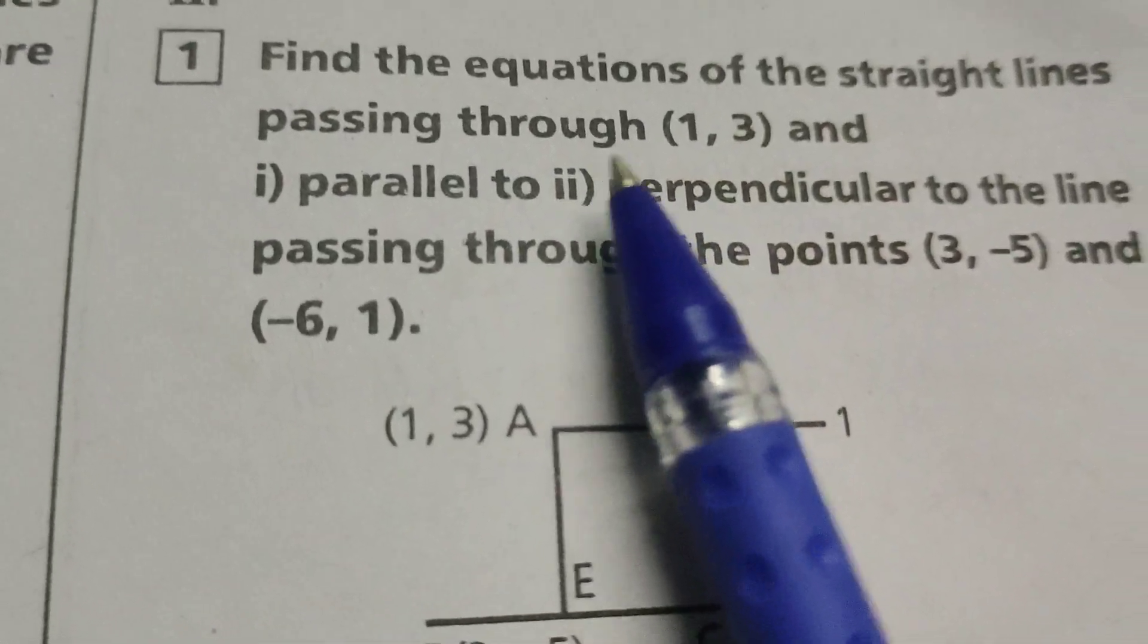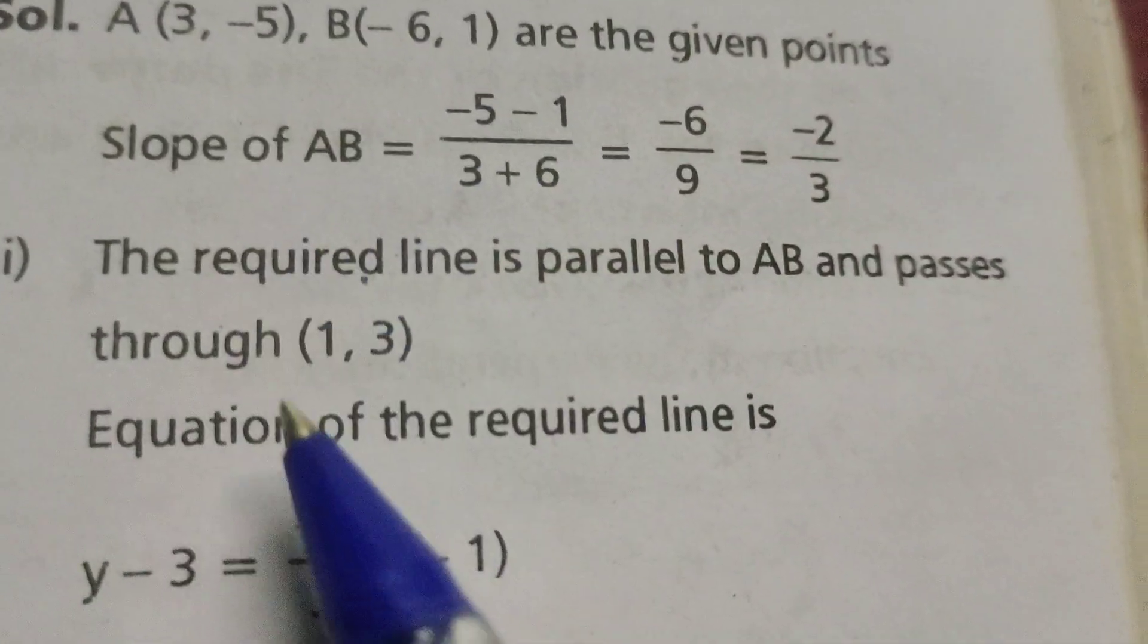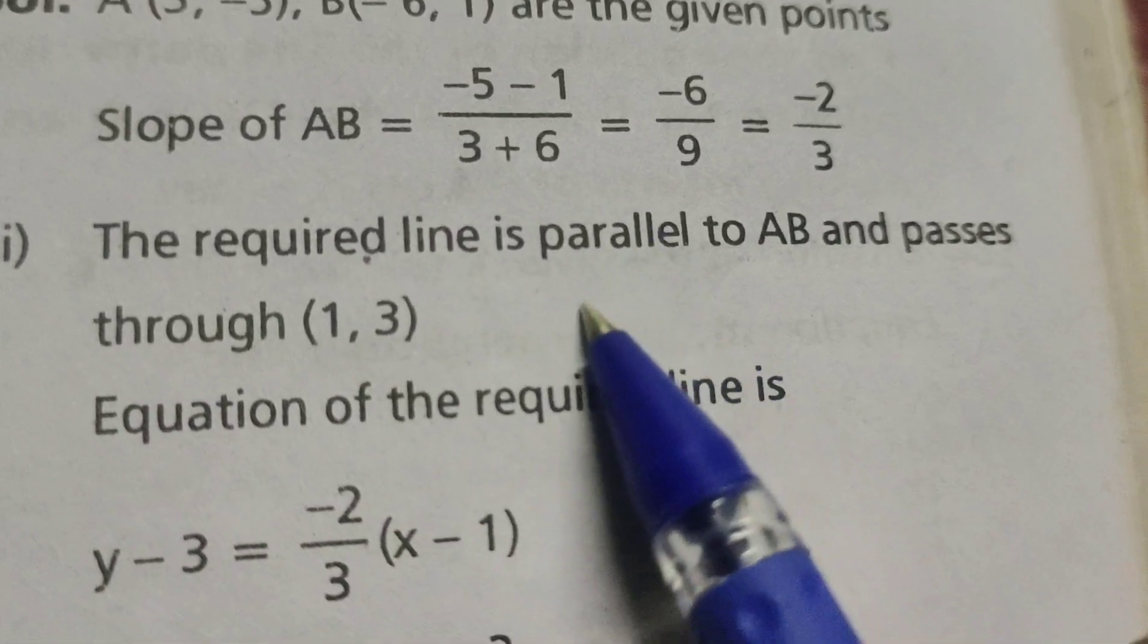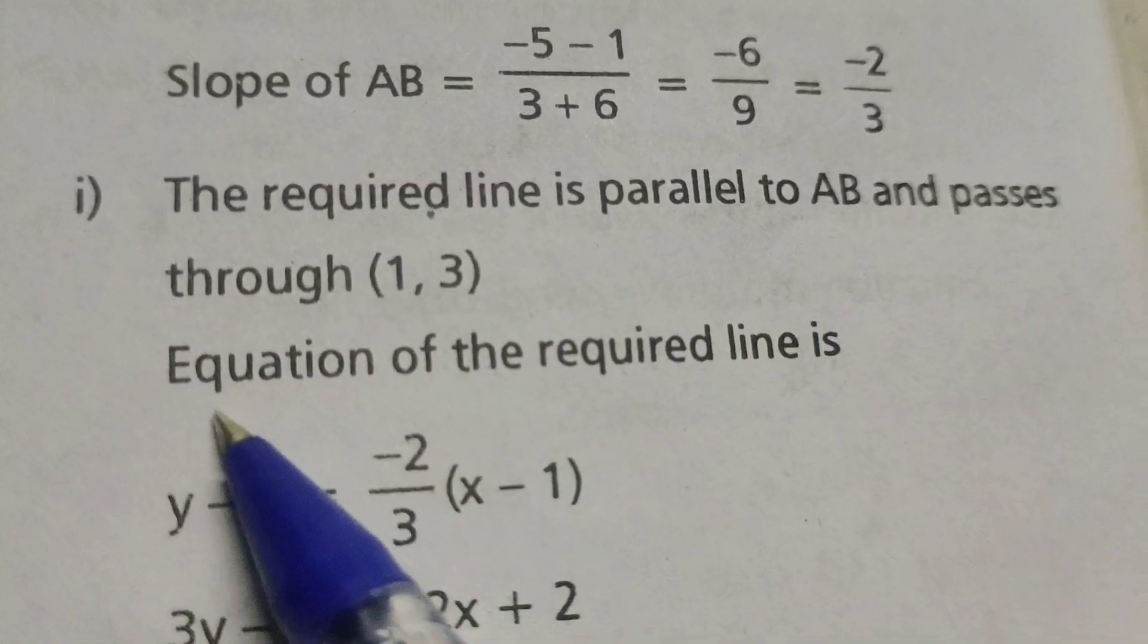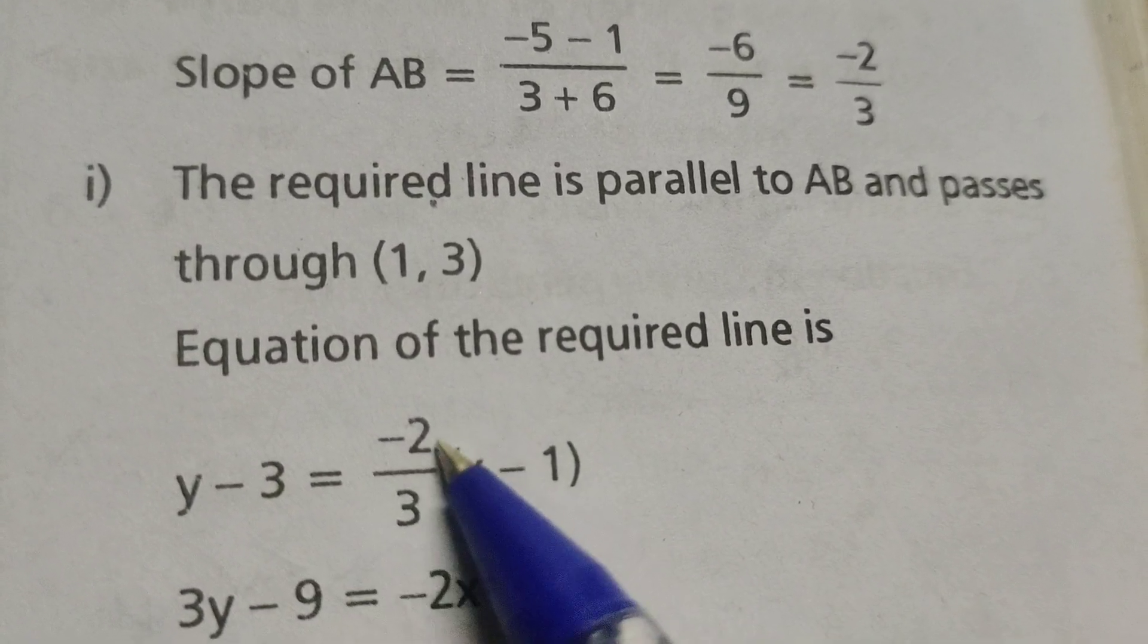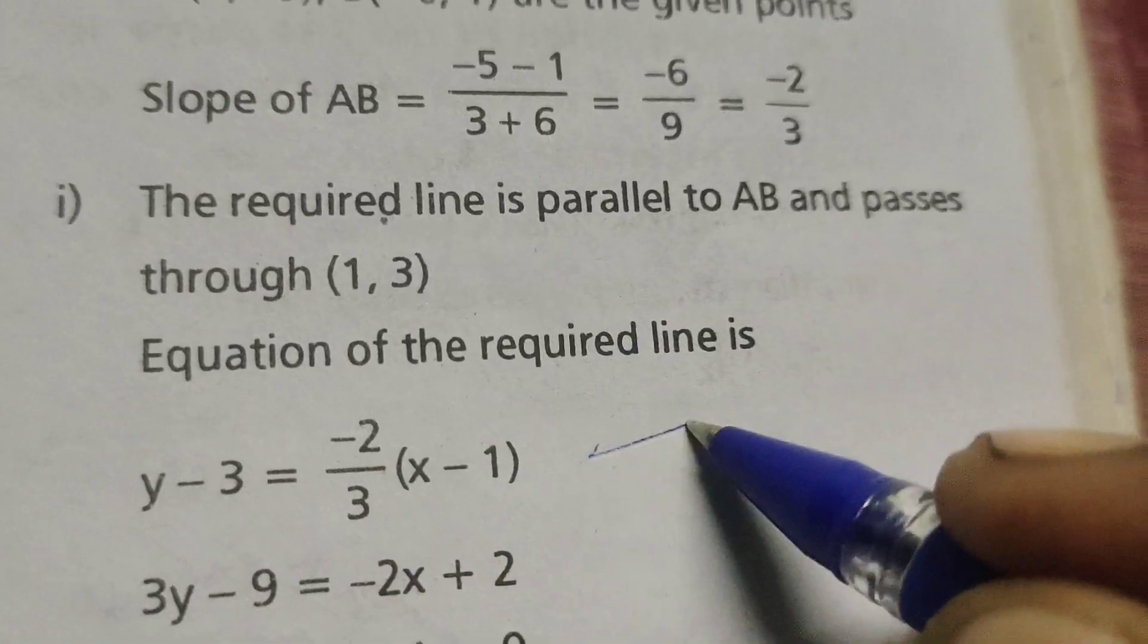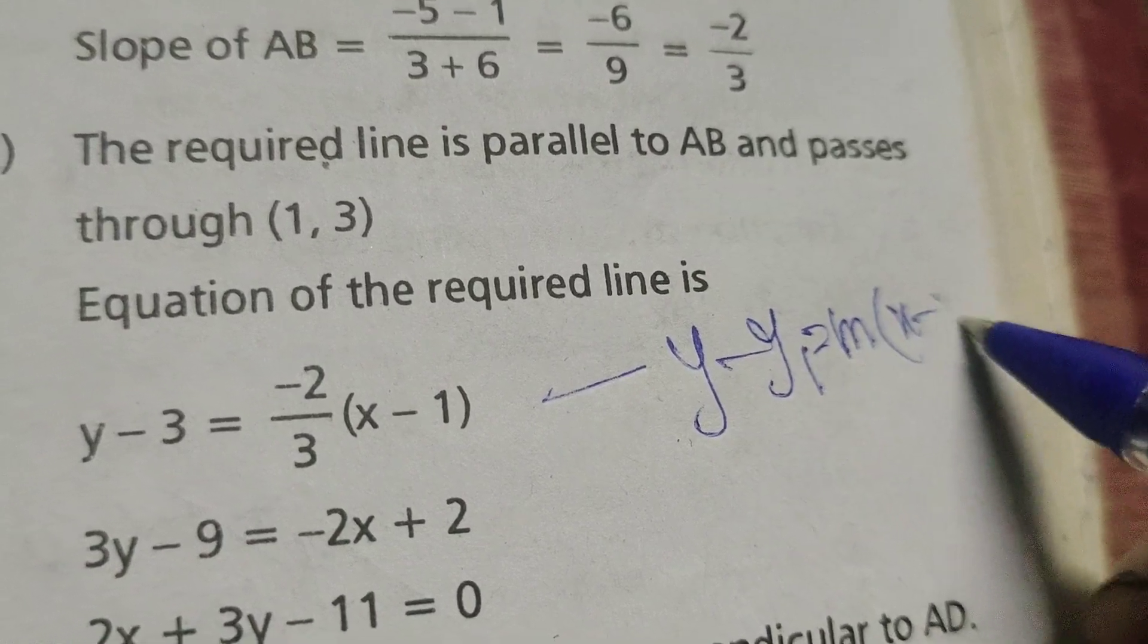Find out passing through this point parallel to equation of the line. So the required line is parallel to AB and passes through (1, 3). Then find out equation of the required line is y minus y1 equals to m into x minus x1 formally, m into x minus x1.